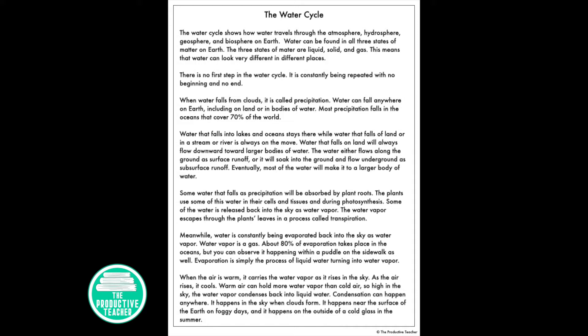There is no first step in the water cycle. It is constantly being repeated, with no beginning and no end. When water falls from the clouds, it is called precipitation. Water can fall anywhere on Earth, including on land or in bodies of water. Most precipitation falls in the oceans that cover 70% of the world.